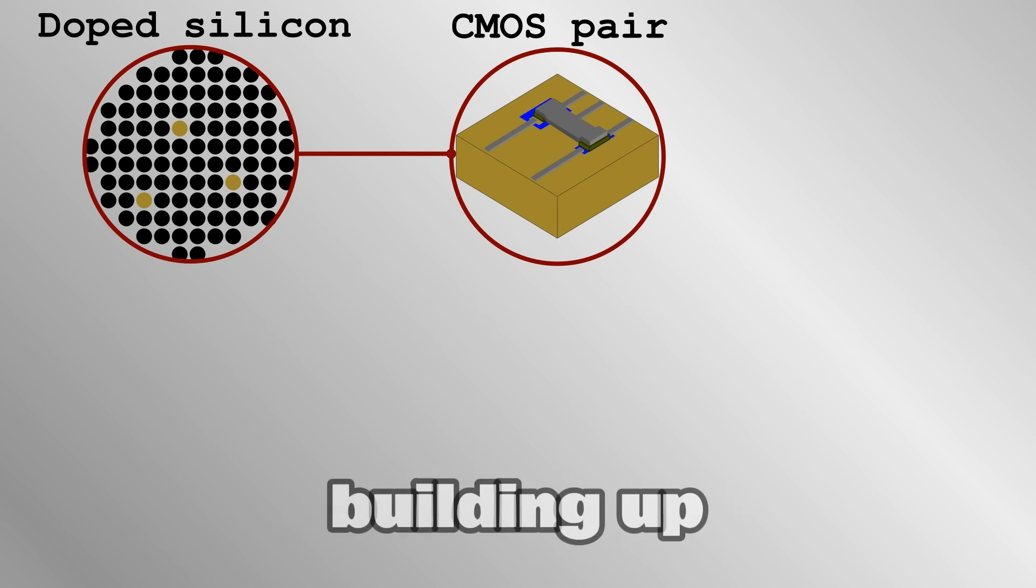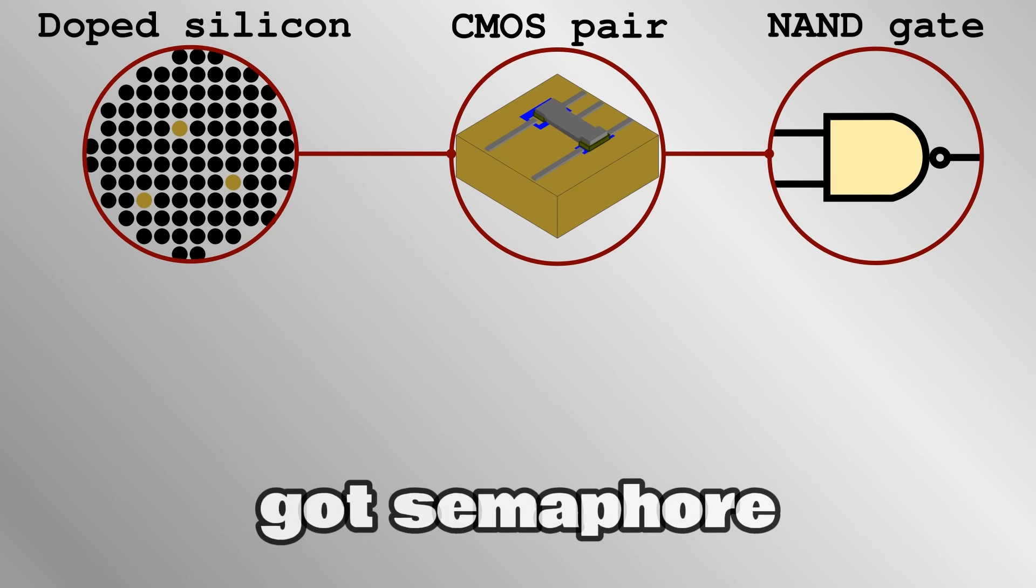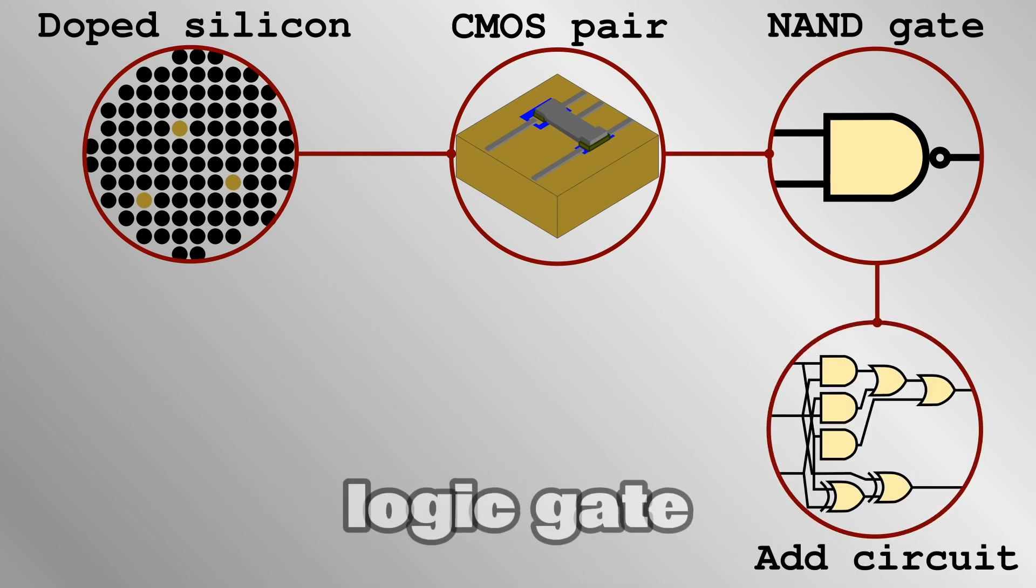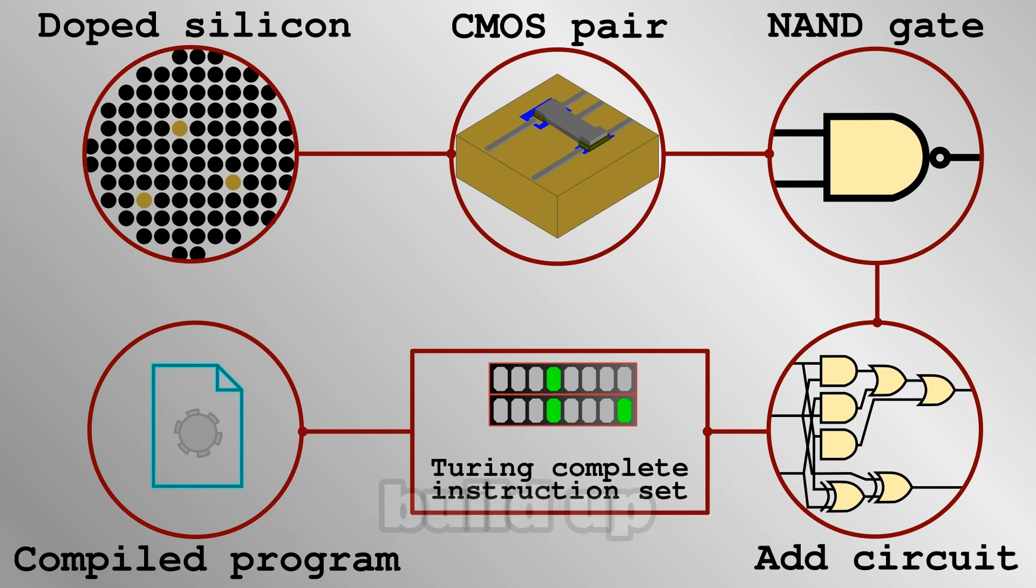Computing is all about building up simpler concepts to achieve more complicated ones. If you've got CMOS pairs, you can make a NAND gate. If you've got NAND gates, you can make any logic gate. If you have logic gates, you can make instructions. If you have instructions, you can make algorithms into functions. From functions, you can build up programs as complicated as you like.